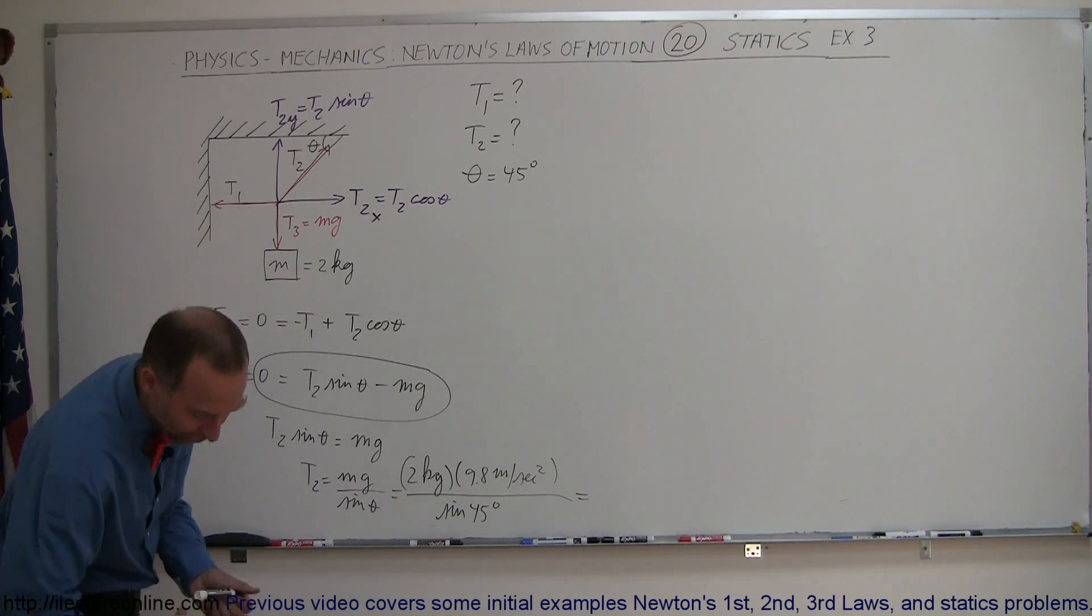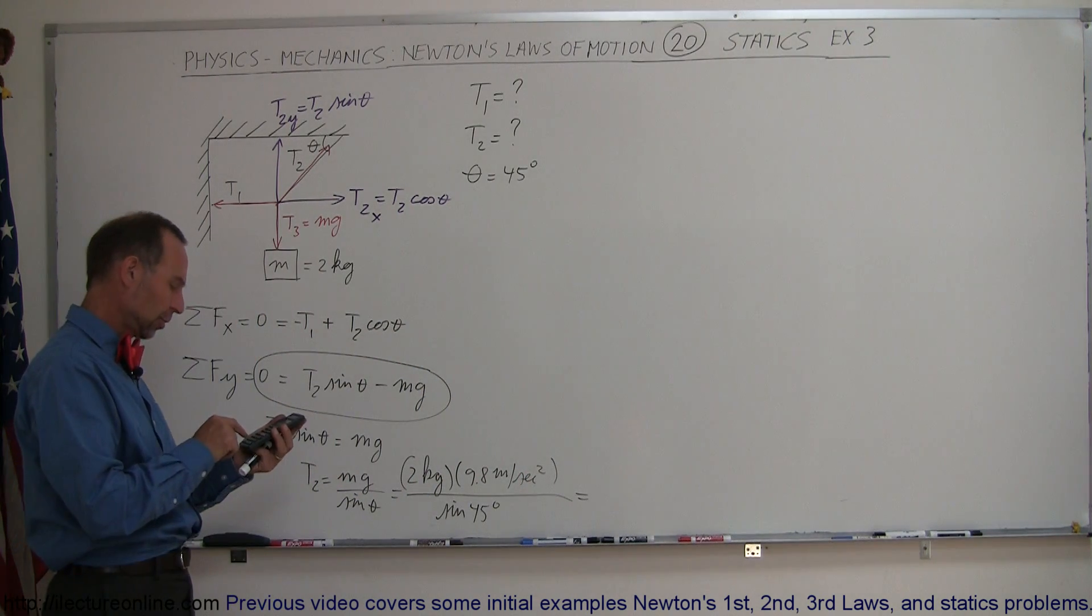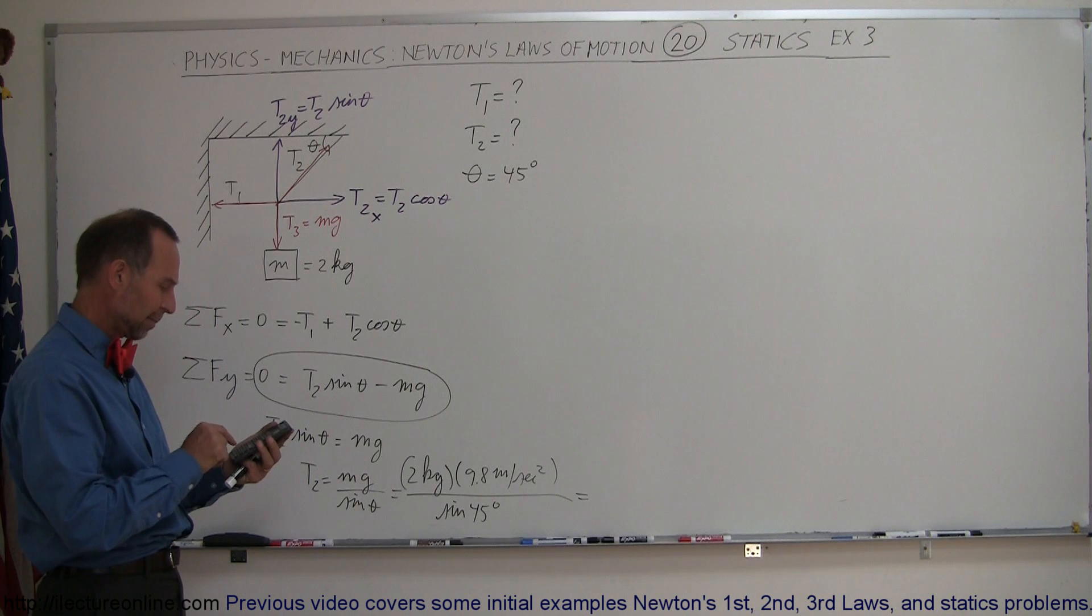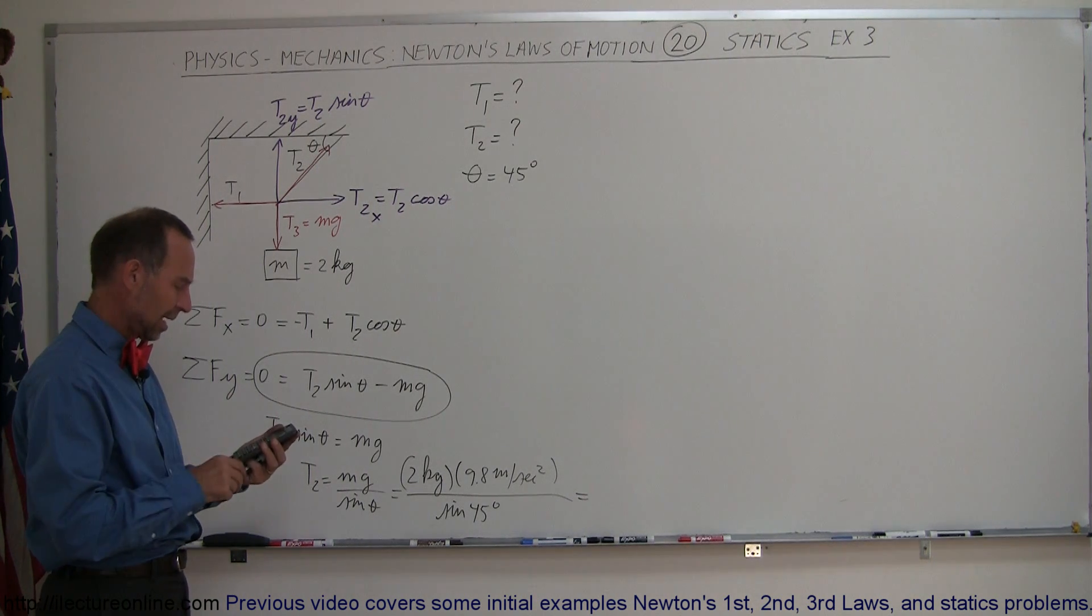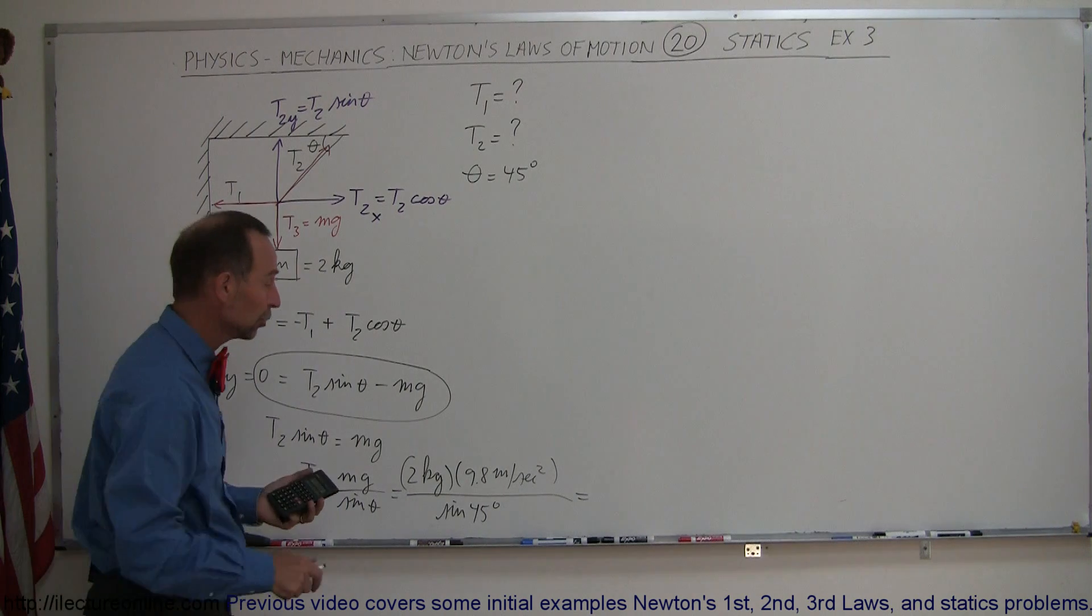So that will give us the value for T2, so we have 19.6 divided by the sine of 45 degrees, and that's 27.7 newtons.